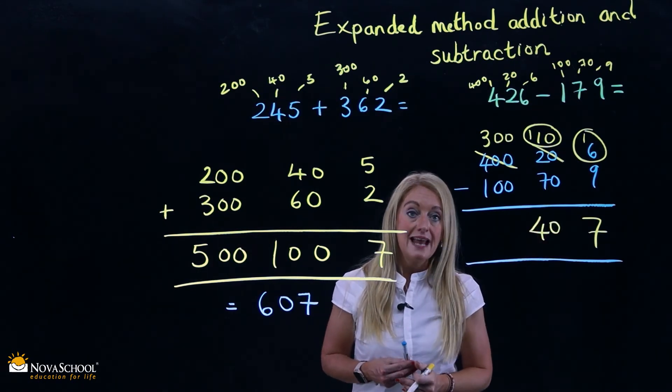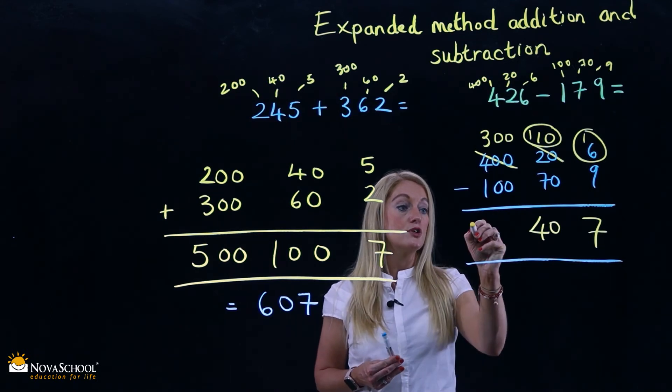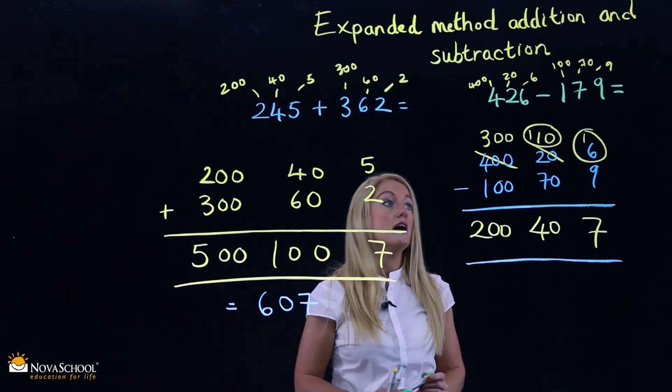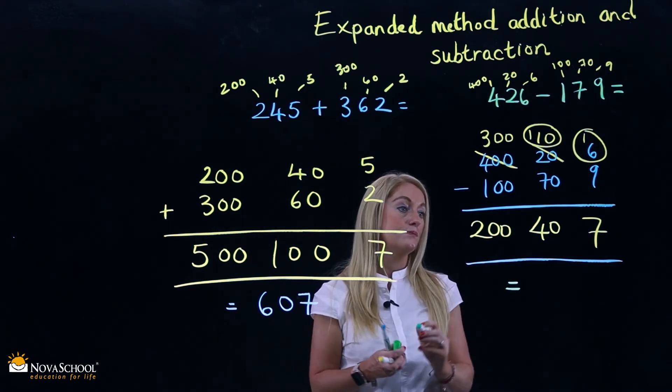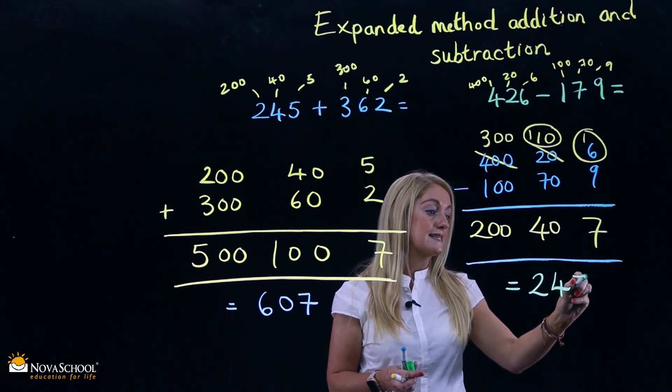Good, well done. Now we can do the final part of the subtraction, 300 take away 100, which is 200. Giving our final answer of 247.